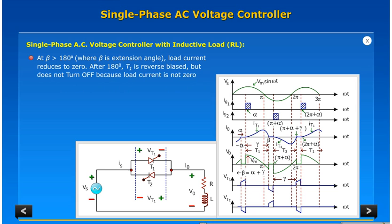At beta greater than 180 degrees where beta is extension angle, load current reduces to zero. After 180 degrees T1 is reverse biased but does not turn off because load current is not zero. At beta when load current is zero, T1 is turned off as it is already reverse biased.